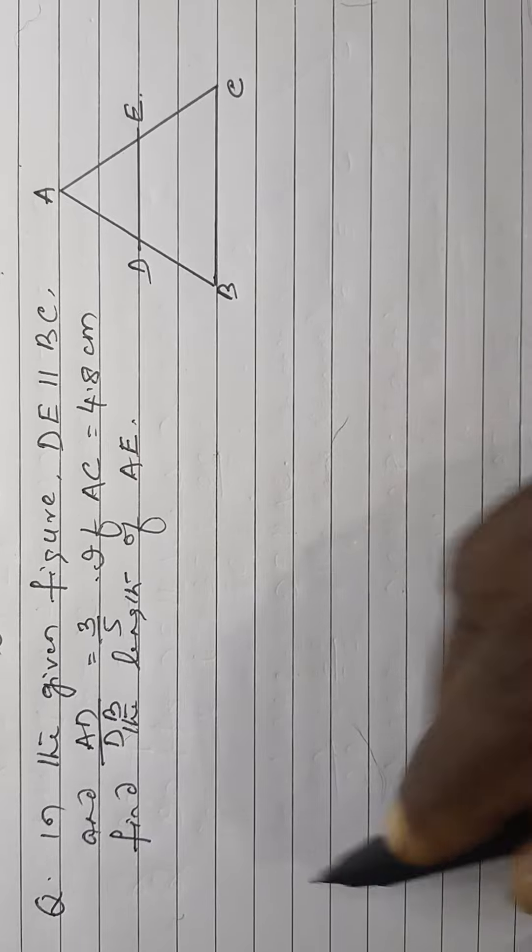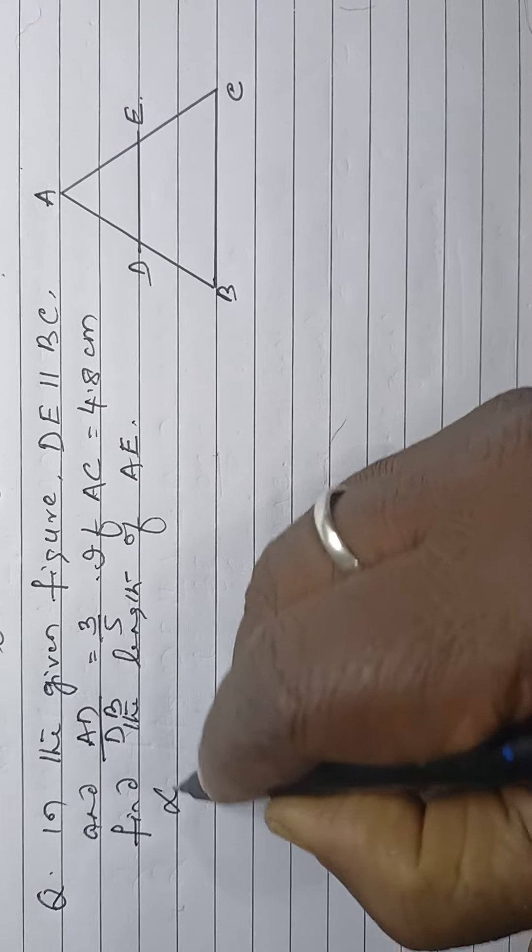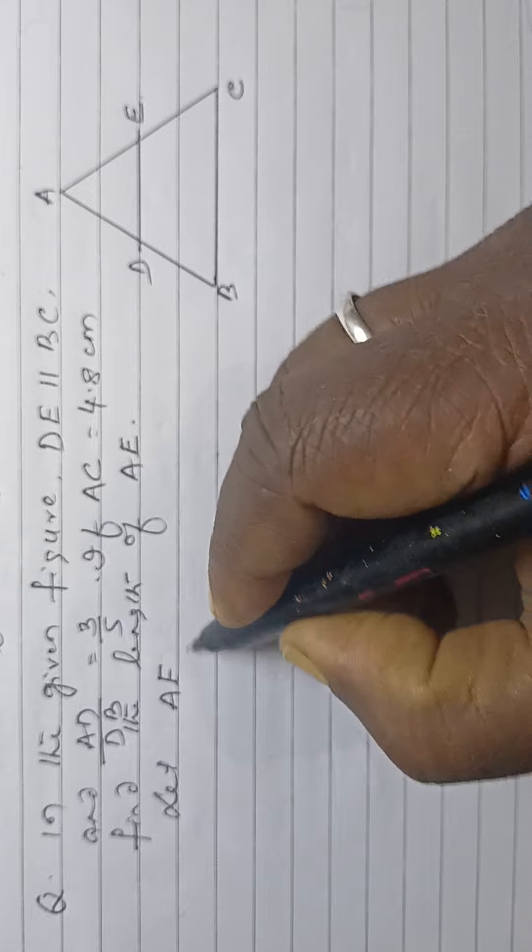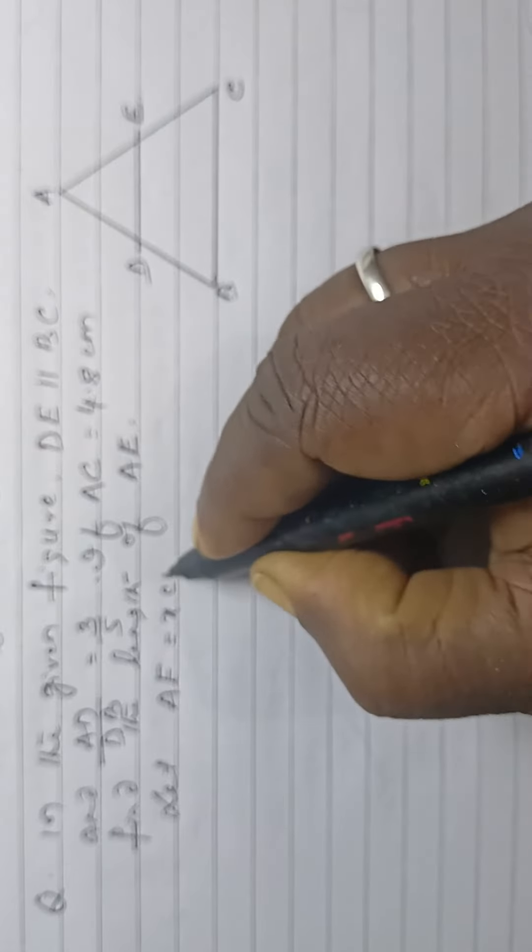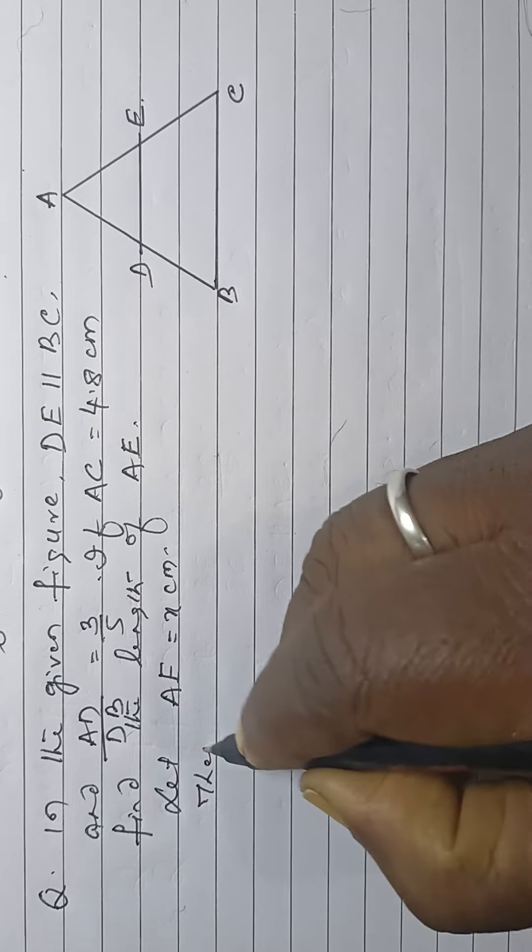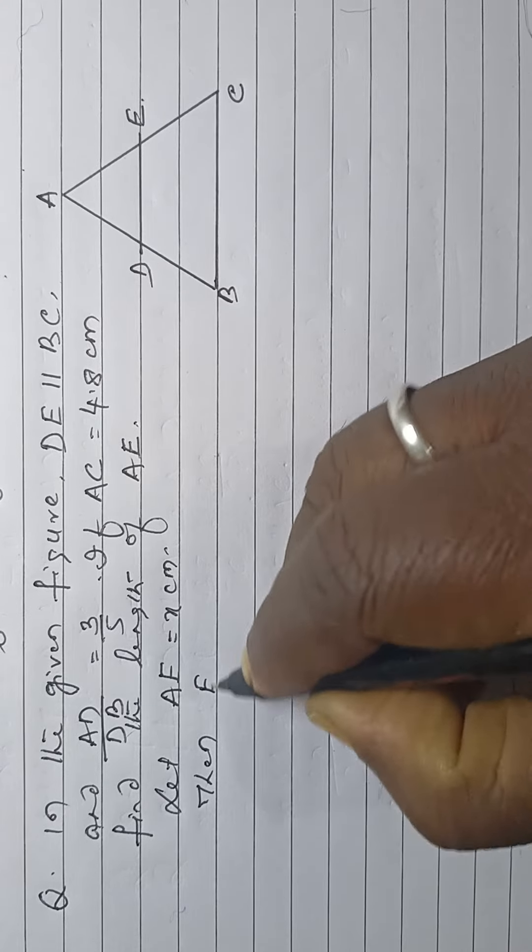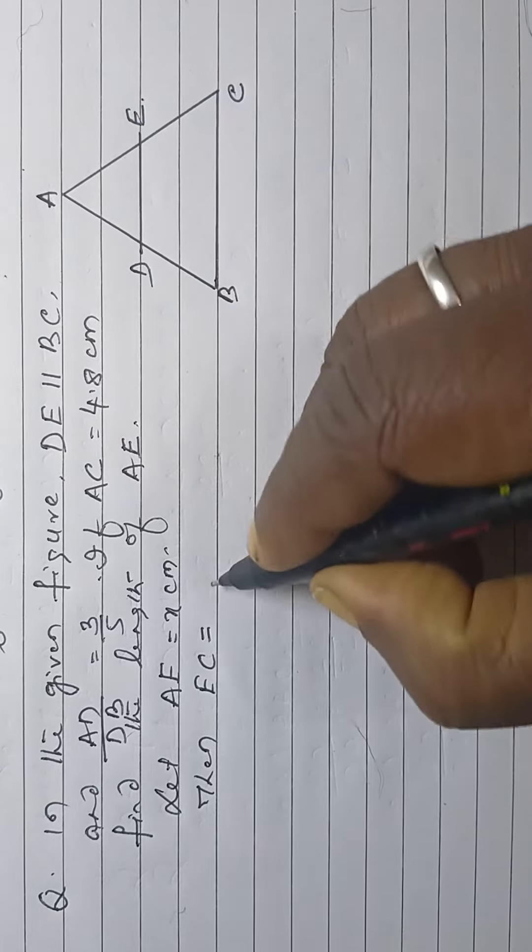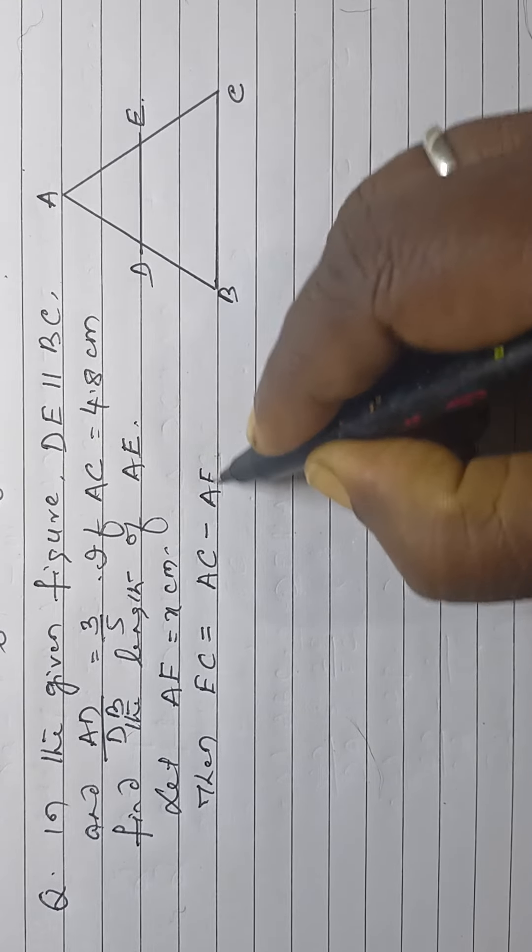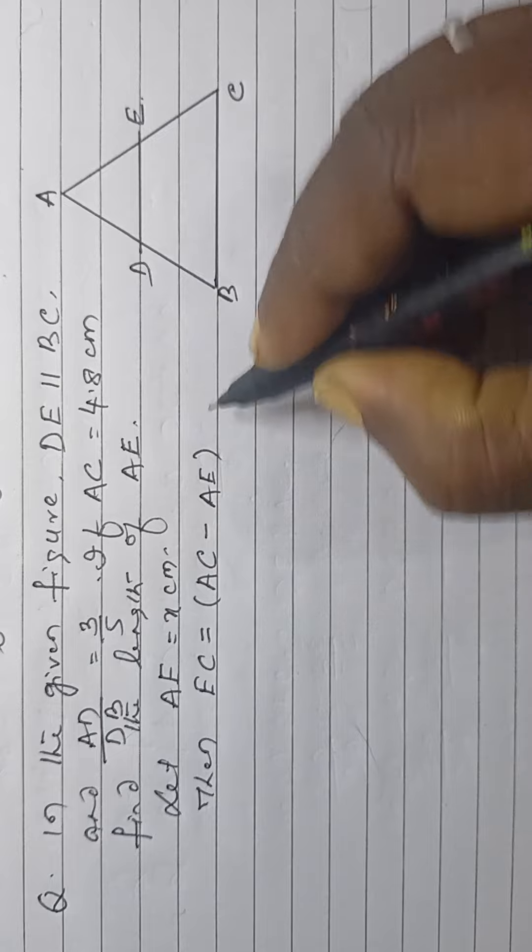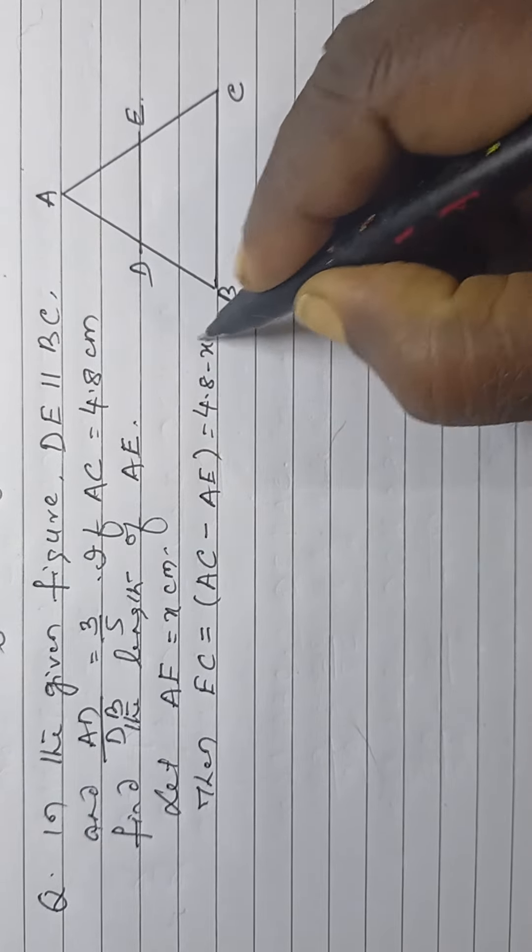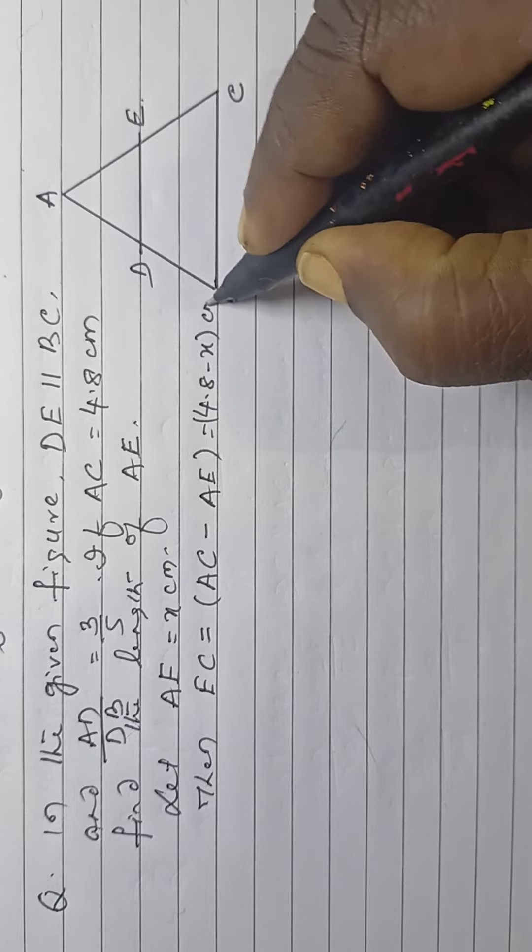Figure is here. Let AE be X centimetre. Then, EC is equal to AC minus AE. That is 4.8 minus X centimetre.